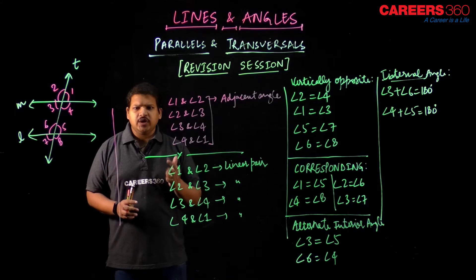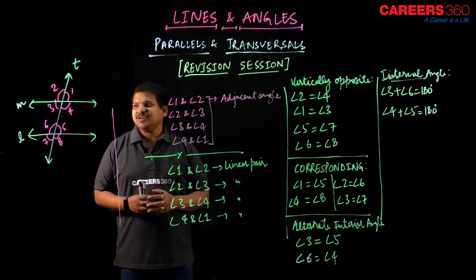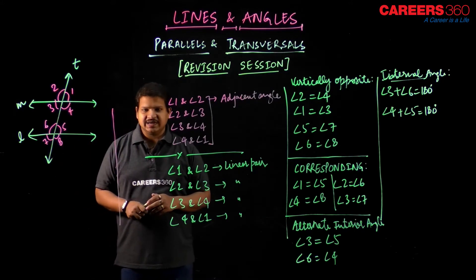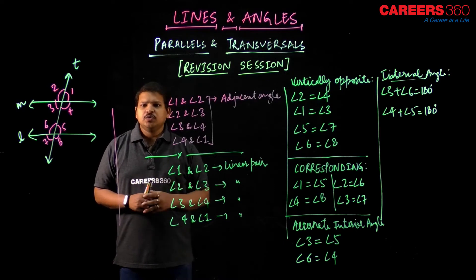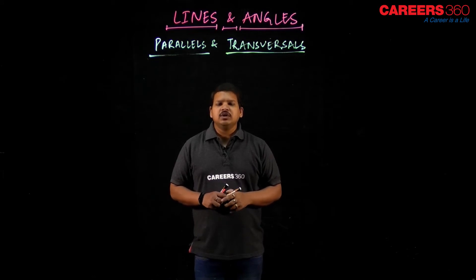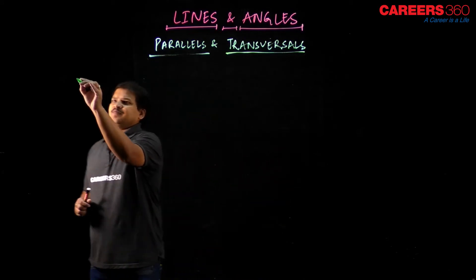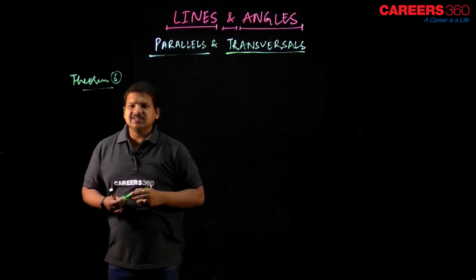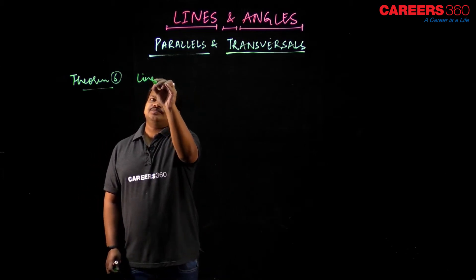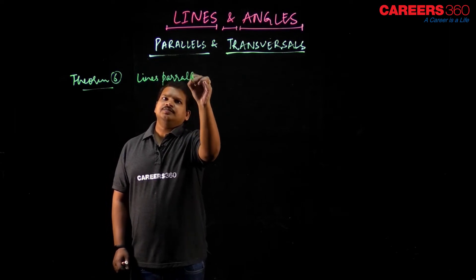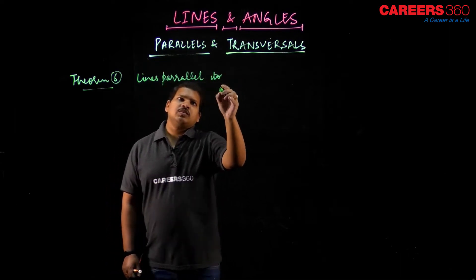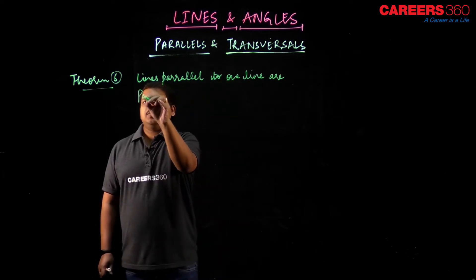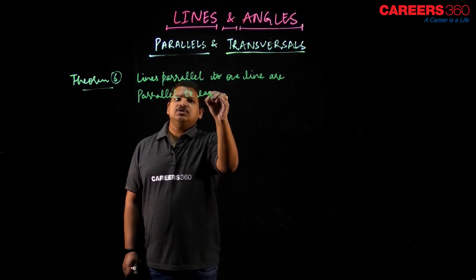I hope this quick revision was useful. I am sure you will excel in finding angles. Now let us move forward to solving a question. Before proceeding to the question, let us look at one important theorem — Theorem 6 of this chapter — which states: lines parallel to one line are parallel to each other.